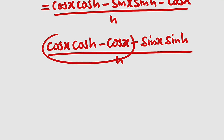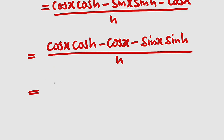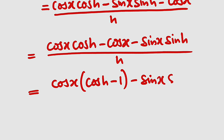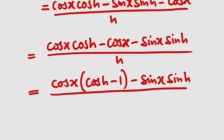Now you can see we have cosine x in two places, so let us bring them together. We have cosine x multiplied by cosine h, then minus cosine x, which is the last term. Then we bring the term minus sine x times sine h, all divided by h. We are only simplifying the function; we have not started applying the limit yet. From these two terms, we have cosine x in common, so we can factor it out.